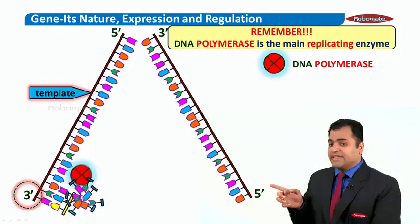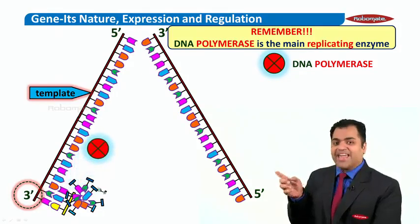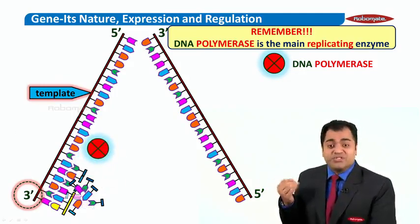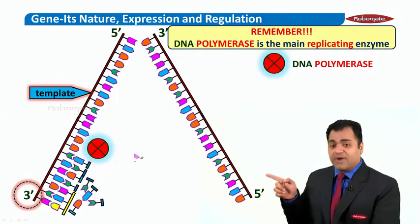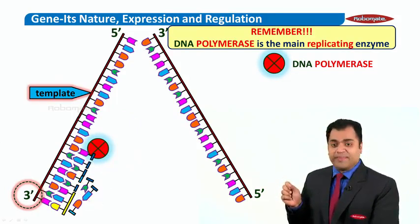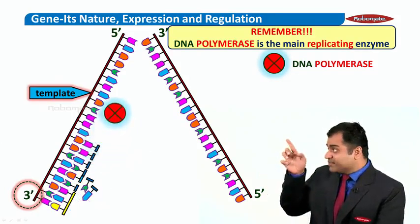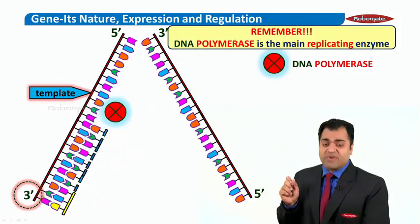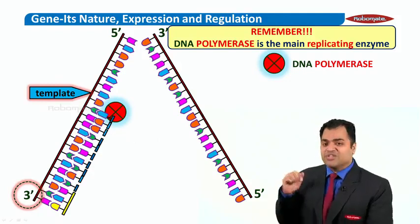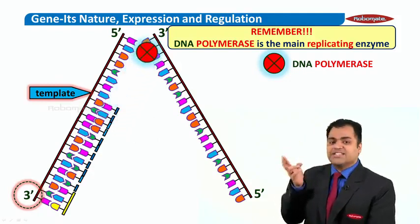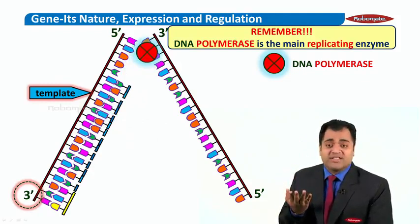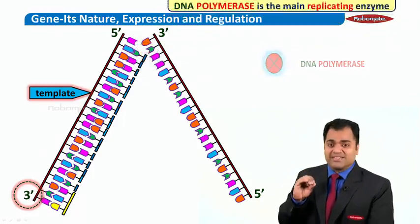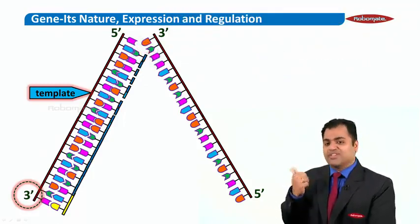That's the polymerase here. It is scanning the template and it is adding the complementary base pairs and building up the new strand. You can see how that is happening. Look carefully. I am going to go ahead some more, adding new bases in my new strand that are complementary to the template strand. That is what DNA polymerase does. It scans the template and it keeps adding the nitrogen bases complementary to the template strand.